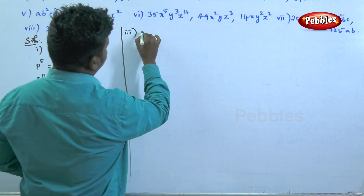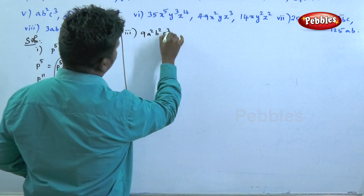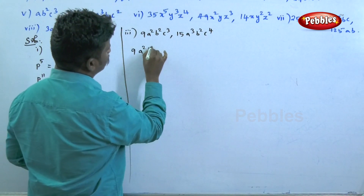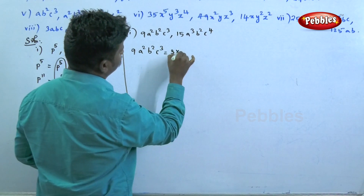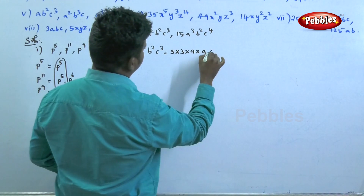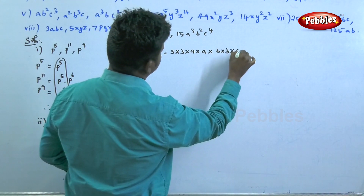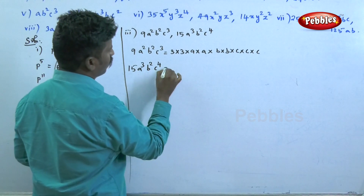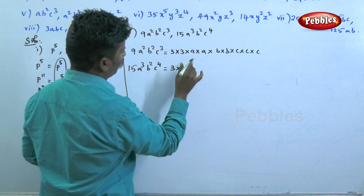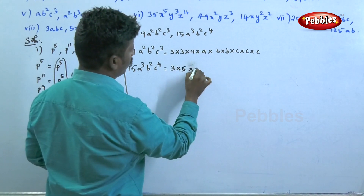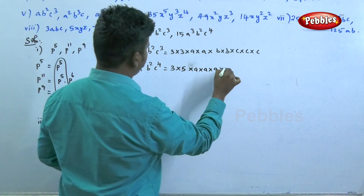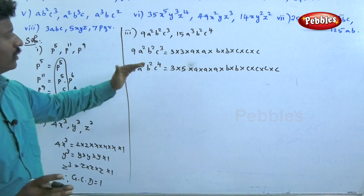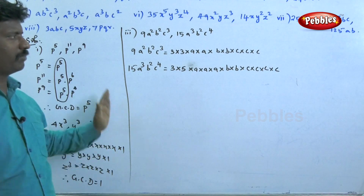The third question: find the GCD of 9a²b²c³ and 15a³b²c⁴. We have 9a²b²c³ = 3 × 3 × a × a × b × b × c × c × c. And 15a³b²c⁴ = 3 × 5 × a × a × a × b × b × c × c × c × c.